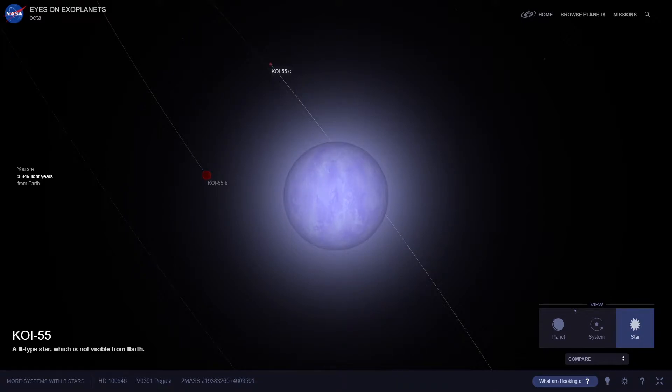The star we're looking at is called Kepler 70 or KOI 55. This star has two planets orbiting around it, but one of those planets is the weirdest planet scientists have ever discovered in the entire universe.